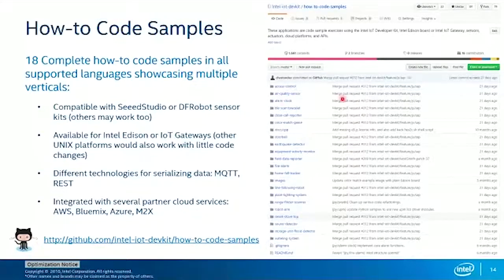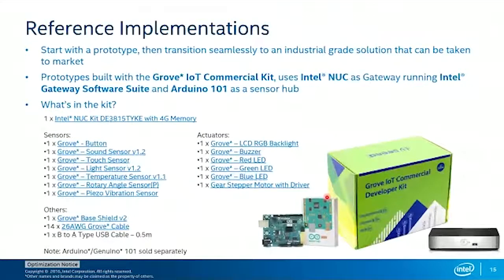You can see how many different verticals we cover with these samples. They're pretty simple to use, and in a lot of cases all you need are sensors from a starter kit to get going. Some of the more serious demos we have are called reference implementations, and these are built around the Grove IoT commercial developer kit. I'm not saying this is the kit you have to get — we just happened to have a couple of them and found them useful for prototyping. You can definitely use other platforms as well.